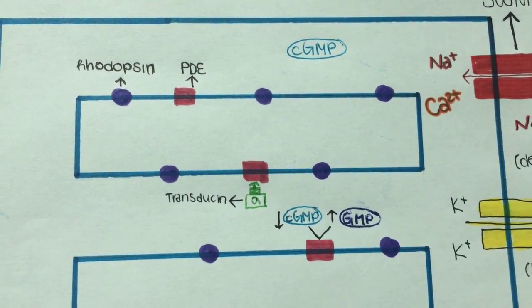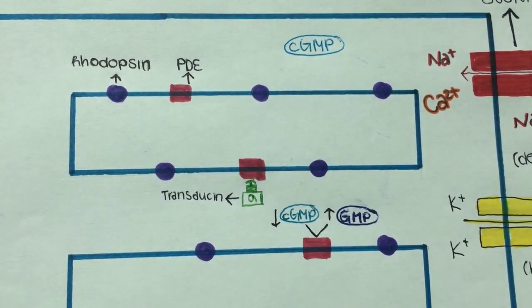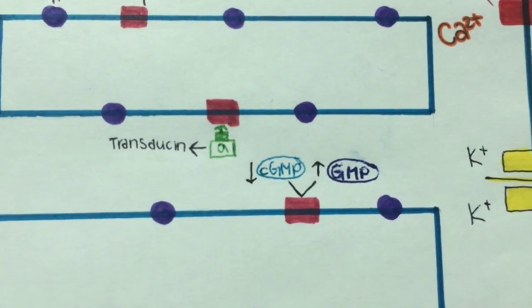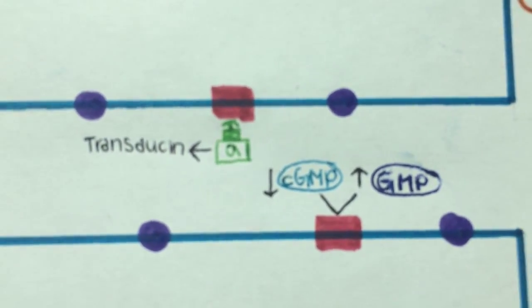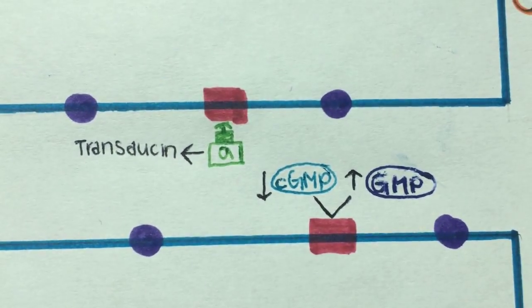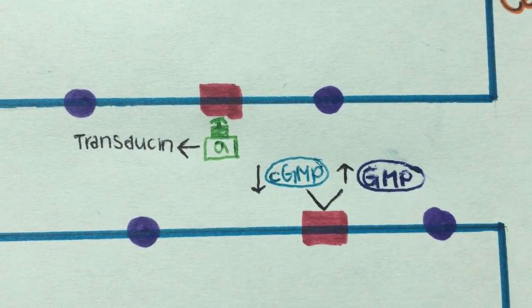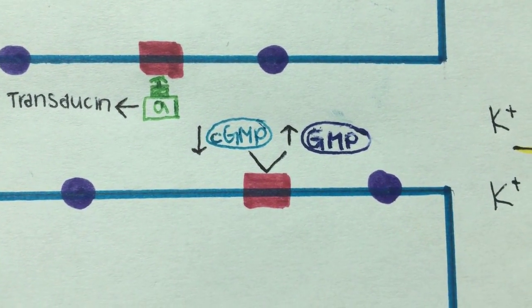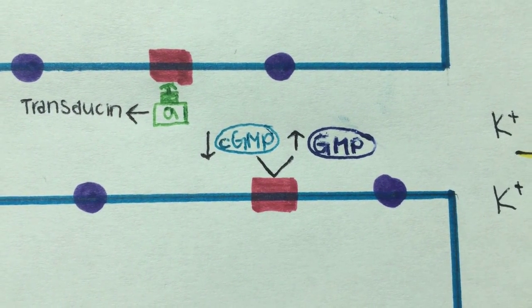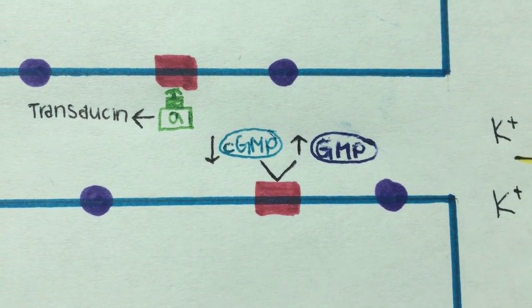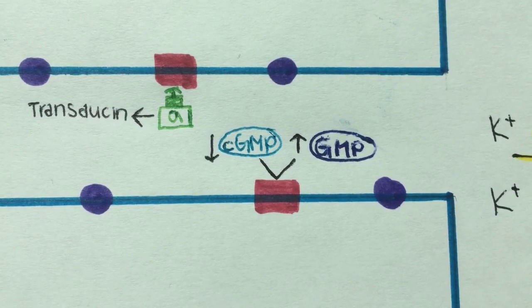The GTP-bound alpha subunit of transducin has just activated PDE. PDE hydrolyzes cyclic GMP, which lowers the concentration of cyclic GMP in the outer segment. This also causes GMP concentrations to increase.